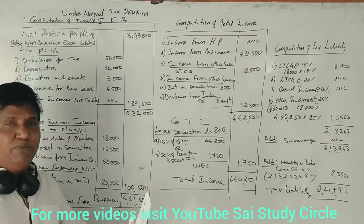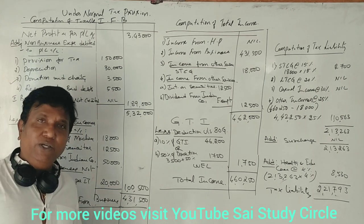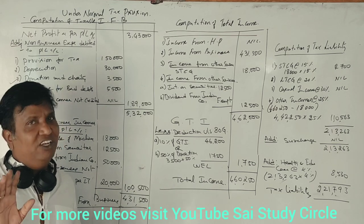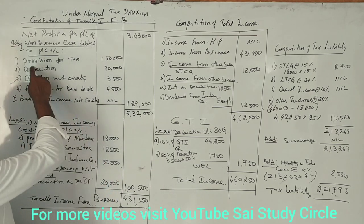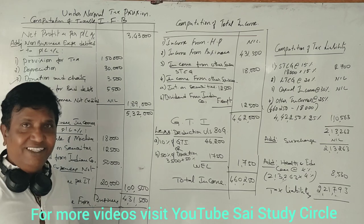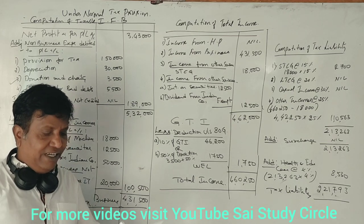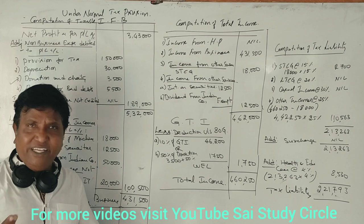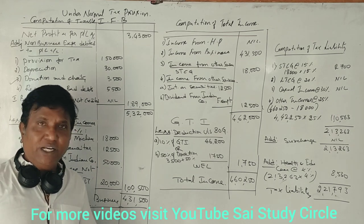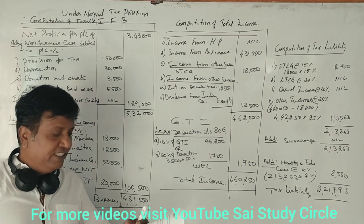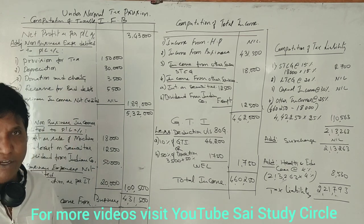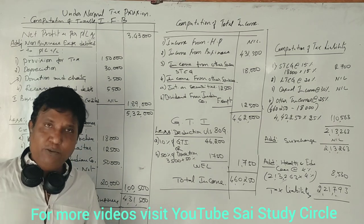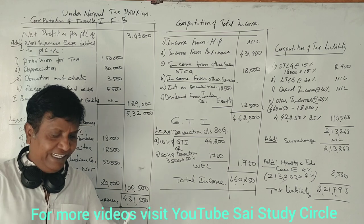On the debit side, the first item is provision for tax. As we know, any provisions or reserves are non-business in nature, so provision for taxation is a non-business item. Rent and taxes is a business expense — ignore it. Fire insurance premium is taken for business premises and stock, so it's a business expense. Office expenses is also a business expense.